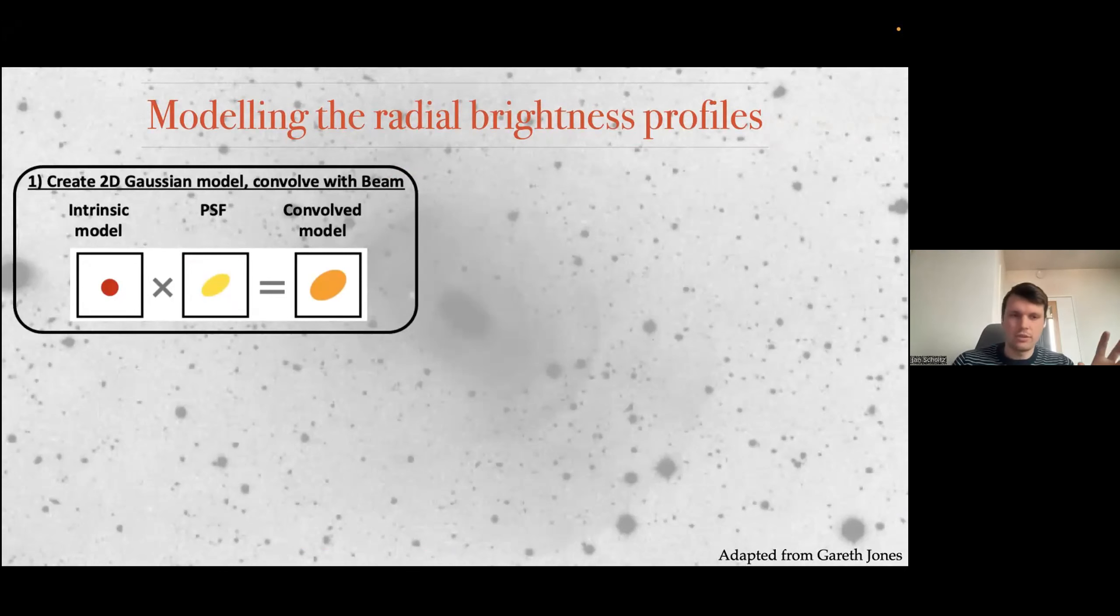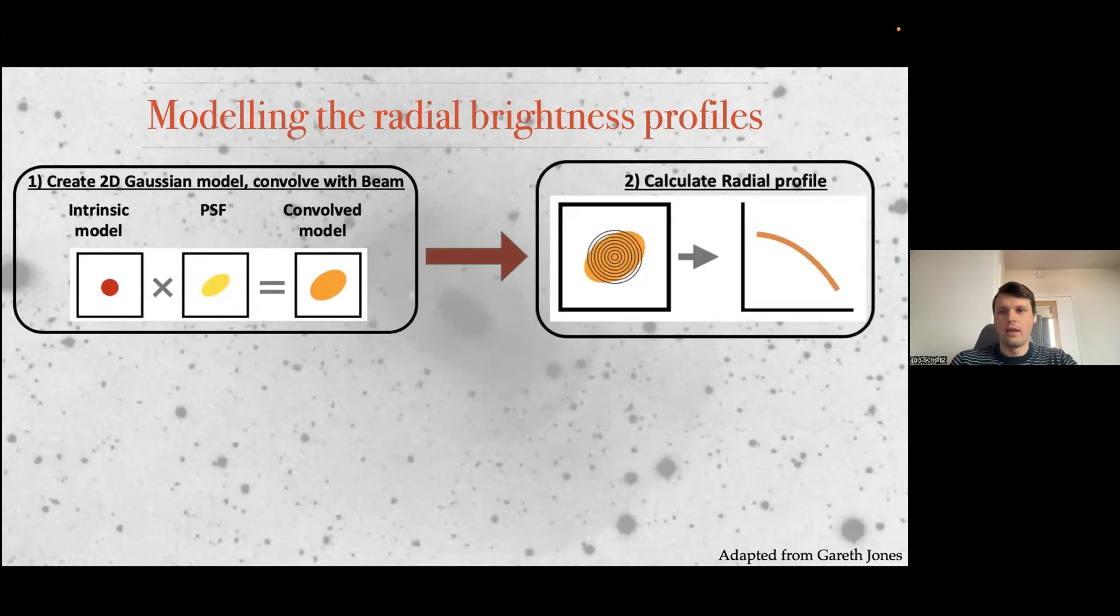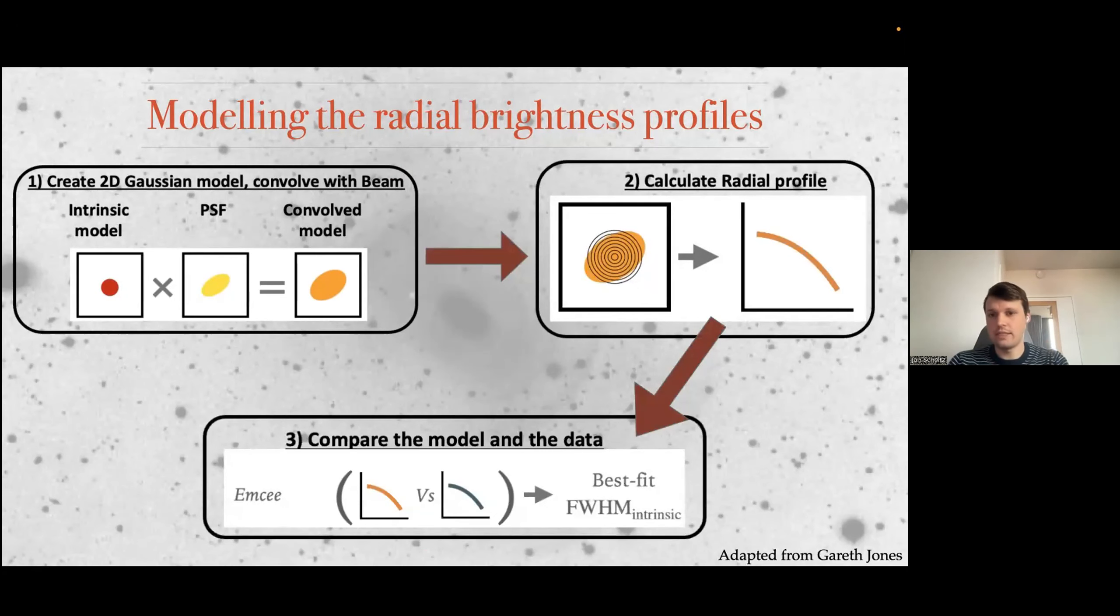We are going to look at the inverse RMS stack weighting here because that's probably the cleanest one. And you have to now model the radial brightness profiles. Usually what you do is you take some intrinsic model, which in our case is a 2D Gaussian with known widths. We convolve it with a PSF, we know very well what's the beam of the object. Then we calculate the radial profile for this convolved model. We then compare it to the data using MCMC algorithm. And that way we can actually find the best fit of the intrinsic size of your object. And then you can do more complex models with two different Gaussians with different sizes.